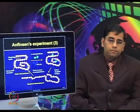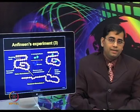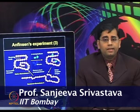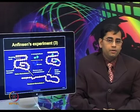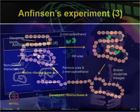On treatment with urea and beta-mercaptoethanol, ribonuclease A protein lost its native conformation because of breaking of disulfide and non-covalent linkages. When the ribonuclease was oxidized in air and urea was removed by dialysis, the enzyme activity slowly recovered as a result of protein refolding. Once urea is removed, protein folding slowly occurs, resulting in the reformation of tertiary structure and the active site.